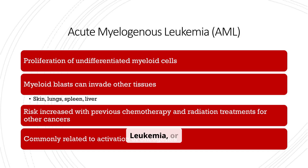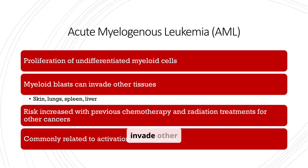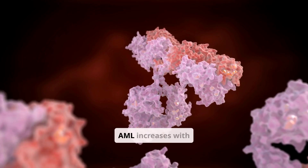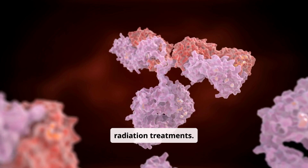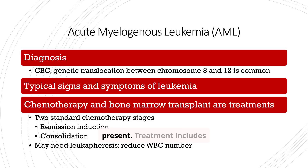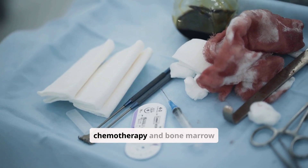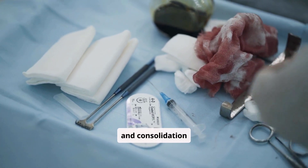Acute myelogenous leukemia, or AML, involves the proliferation of undifferentiated myeloid cells. These myeloid blasts can invade other tissues. The risk of AML increases with previous chemotherapy and radiation treatments. Diagnosing AML involves a CBC and genetic translocation analysis, and typical signs and symptoms of leukemia will be present. Treatment includes chemotherapy and bone marrow transplant, often involving remission, induction, and consolidation stages.